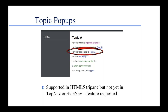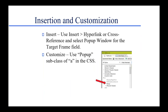If you're using topic pop-ups with one of the cool new top nav outputs like Coronado, just be aware your pop-up won't work. Hopefully that will be fixed really soon. How do you insert these? Easy — select Insert Hyperlink or Cross-Reference, and in the Target Frame field there's a Pop-up Window option. If you want to customize it, open the style sheet editor, expand the A tag, and you'll find a sub-class called 'popup' where you would set the properties.